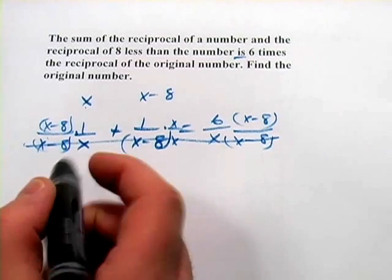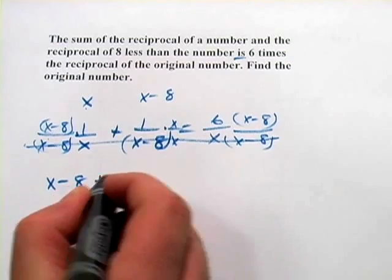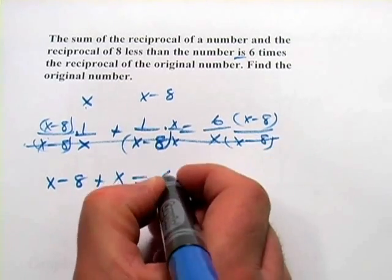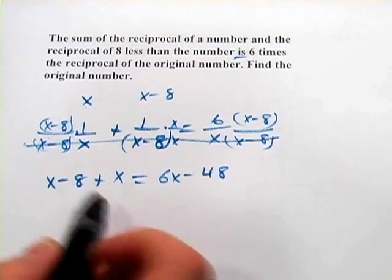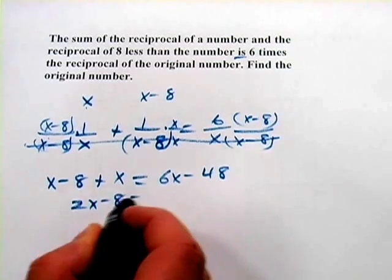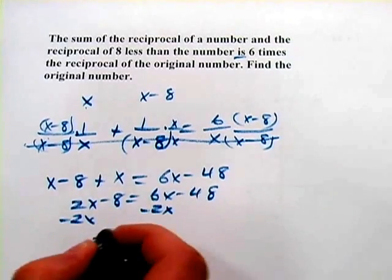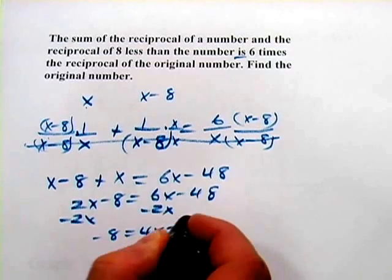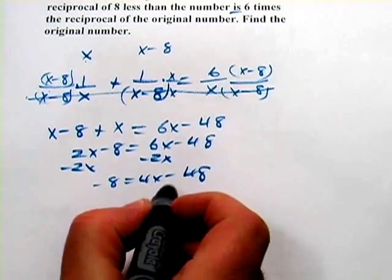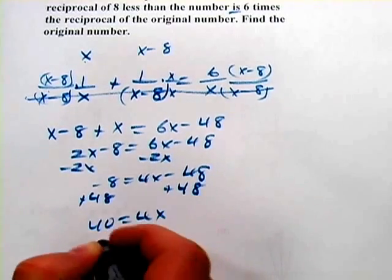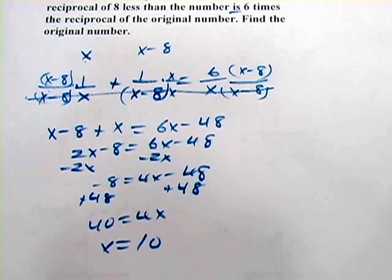So what's on the top here? We have x minus 8 times 1, so that's just x minus 8, plus 1 times x, so that's x, equals 6 times x minus 8, so that's 6x minus 48. Combine our like terms here. We have 2x minus 8 equals 6x minus 48. I would subtract 2x from both sides. I get negative 8 equals 4x minus 48. And then I think I will add 48 to both sides, and I get 40 equals 4x or x equals 10. So that's a little bit of work with word problems that require rational expressions.